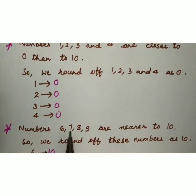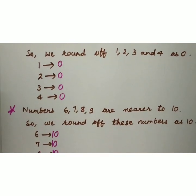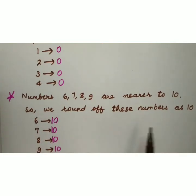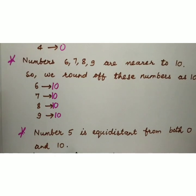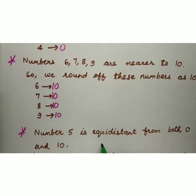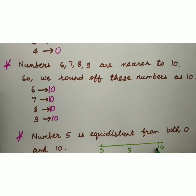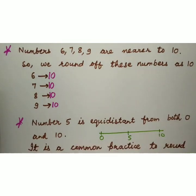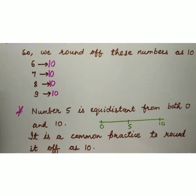So this is rounding off to the nearest tens. Now next, numbers 6, 7, 8, 9 are nearer to 10. So we round off these numbers as 10. In numbers ko bhi hum round off karke 10 likhte hain. Kyunki ye numbers 10 ke zyadha close hain. Number 5 is equidistant from both 0 and 10. It means number 5, 0 or 10 se equal distance pe hai. It is a common practice to round it off as 10.